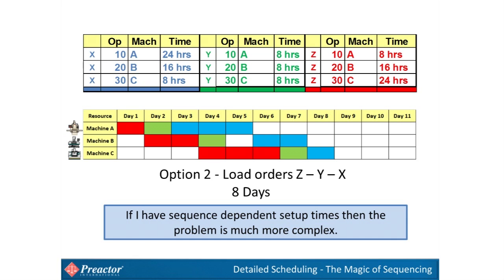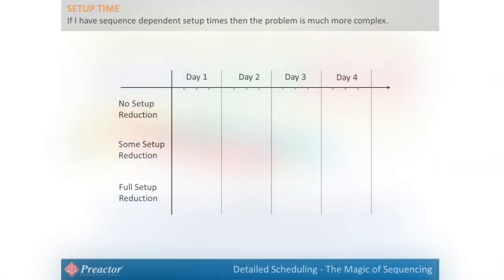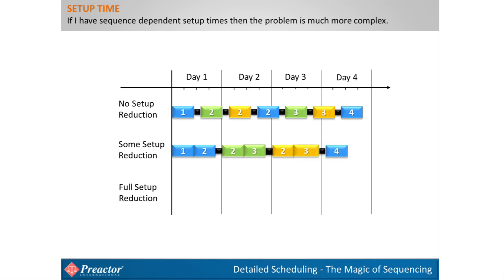If sequence-dependent setup times are added, the mathematics becomes more complex. For example, it might take one hour to change from product X to Y, but three hours to change from Y to X. An example with three products — blue, green, and yellow — shows the run time as colored bars and the setup time as black areas between them. By applying sequencing logic and grouping batches of the same type together (where setup time between same-type products is zero), setup time is greatly reduced. Depending on how far ahead we look, further improvements can be made, and the total time to complete all batches is greatly reduced.